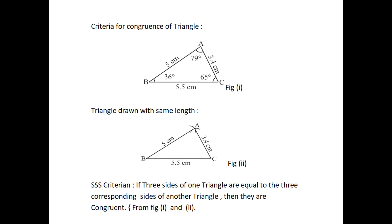Next, criteria for concurrence of triangles. Consider triangle ABC and see the length of each of its sides and the measure of each of its angles. Now, we can draw another triangle with the same length as triangle ABC, which is shown in figure 2. Both triangles are concurrent. So, to draw a concurrent of a given triangle ABC, we need the length of 3 sides. This condition is called the side-side-side criterion. That is, if under a given correspondence, the 3 sides of one triangle are equal to the 3 corresponding sides of another triangle, then the triangles are concurrent.